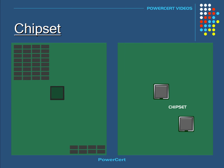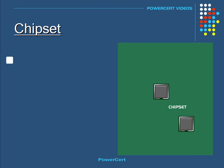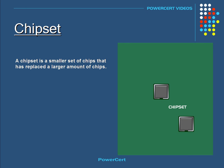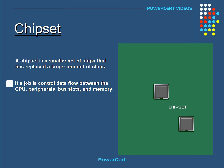A chipset is a smaller set of chips that has replaced a larger amount of chips. The chipset's job is to control data flow between the CPU, the peripherals, bus slots, and memory. So all of the different parts of the computer communicate with the CPU through the chipset.